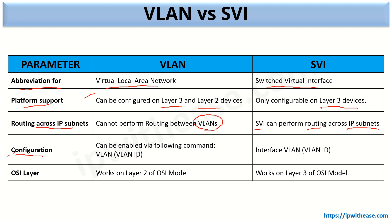For configuration: to configure a VLAN, we go into configuration mode and type the VLAN ID, which can be 1, 2, 3, 10, 20, or whatever we want. For SVI, we go into configuration mode, then type 'interface VLAN' followed by the VLAN ID such as 1, 2, 3, 10, and assign it an IP address — that is how SVI is configured. Lastly, in terms of the OSI layer: VLAN works on layer 2 (the data link layer), while SVI works at layer 3 (the network layer) because it communicates via IP addresses.